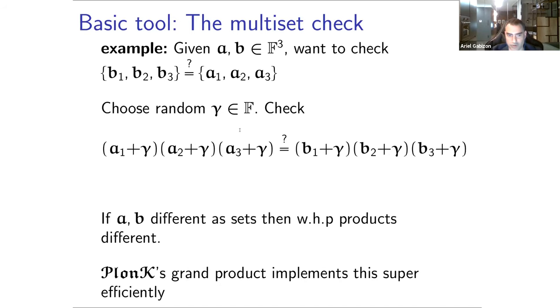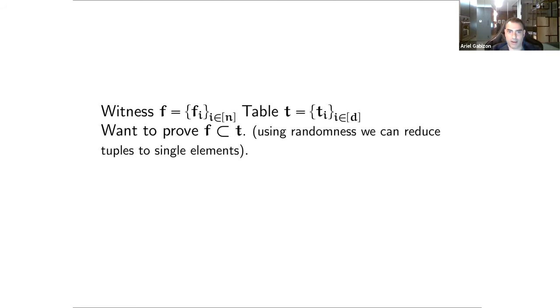This core contribution of the Plonk paper is how can I actually do this inside a SNARK, this product check? The core contribution of Plonk is a really efficient and simple way to do it. Say you have to commit two polynomial commitments to two vectors, you can do this product check very, very efficiently.